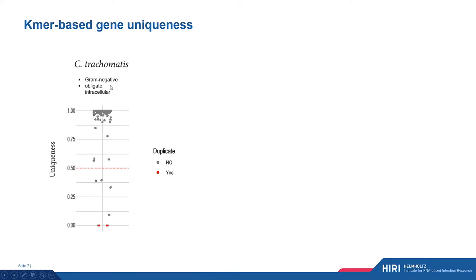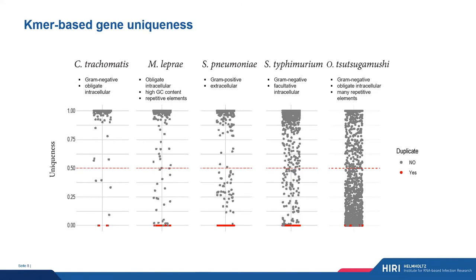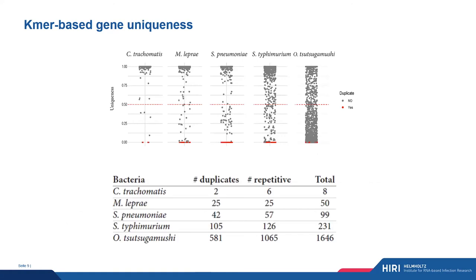For Chlamydia, which is a gram-negative obligate intracellular bacteria, most of the genes are quite unique. Expanding this to other bacteria such as Mycobacterium leprae, Streptococcus pneumoniae, Salmonella typhimurium, and Orientia tsutsugamushi, we can see quite a difference. Orientia, a gram-negative obligate intracellular causing scrub typhus, contains a lot of repetitive elements as you can visually see here. In table form, the duplicates are shown in red and the repetitive is anything below 50% uniqueness. Chlamydia has a total of eight genes that would be challenging to assign reads to, whereas Orientia has over 1,600, which is about 60–62% of the genome — something to keep in consideration.